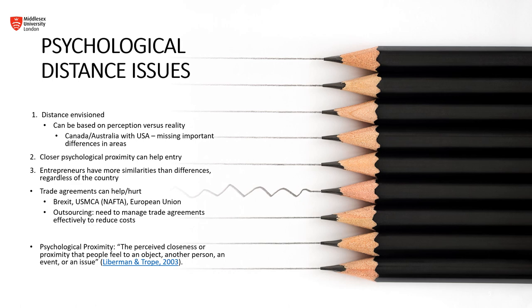Psychological proximity, for those who do not know what that means, is the perceived closeness or proximity that people feel to an object, another person, an event, or an issue.